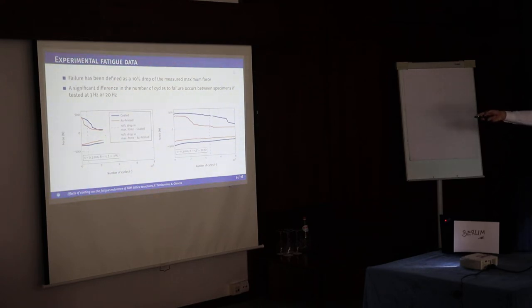What is the criterion we use for assigning the number of cycles to failure? In this case it's a 10% drop on the maximum force, starting from the maximum value at the beginning of phase two, as shown before.